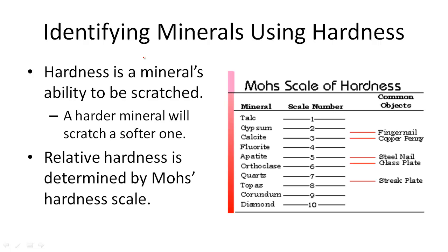Relative hardness is determined by Mohs hardness scale, and an example of Mohs hardness scale is here for you. So talc is a scale of 1, and that's going to be very soft, whereas diamond is the hardest mineral and it's a 10 on the hardness scale.